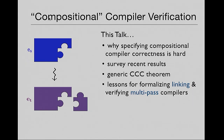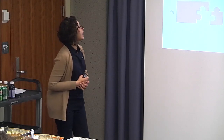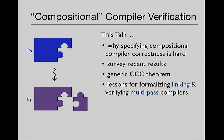I'm going to do a survey of three major recent compositional compiler correctness results and show you how they all specify compiler correctness differently. What we don't understand is what are the pros and cons of specifying compiler correctness in each of those particular ways. Towards the end of the talk, I'll introduce a generic compositional compiler correctness theorem that serves as a framework. I'll try to convince you that should be the right desired theorem for any compositional compiler correctness result, and then talk about lessons for how we want to formalize linking and verify multi-pass compilers.